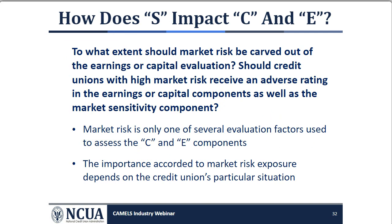To what extent should market risk be carved out of the earnings or capital evaluations? Should a credit union with high market risk receive an adverse rating in earnings or capital as well as in the market sensitivity component? The capital component is evaluated based on the credit union's risk profile, including the effect of market risk and whether the level of capital supports those risks. The earnings component evaluates the ability of earnings to support operations and maintain adequate capital, after considering factors including market risk exposure that could affect the quality, quantity, and trend in earnings.